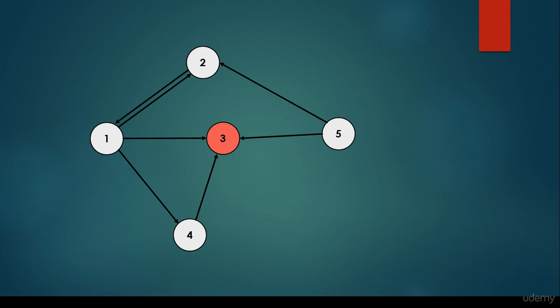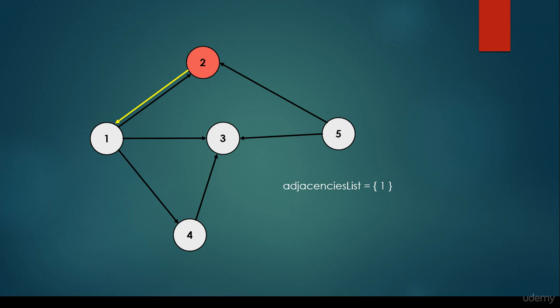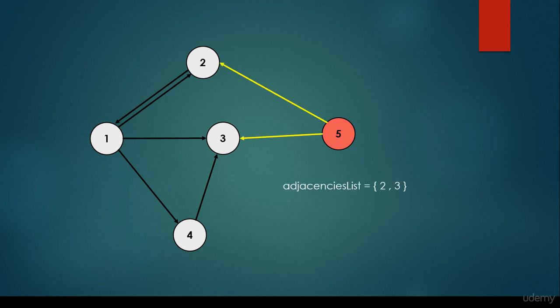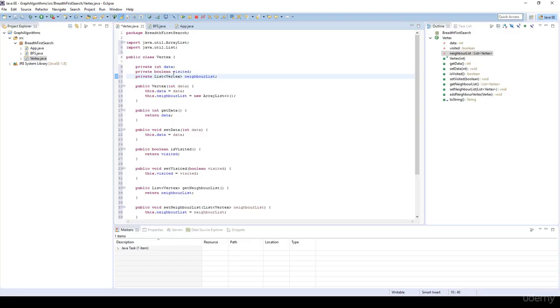If we consider vertex three, it doesn't have any neighbors, so the adjacency list is going to be empty. For vertex two it has a single neighbor — one — so the adjacency list has a single element, one. This adjacency list is the same as the neighbor list, whatever we call it; usually we call it the adjacency list. And vertex five has two neighbors — two and three — so the adjacency list contains two items: two and three. This is why we need this list of vertices named neighbor list: it contains all the neighboring vertices.